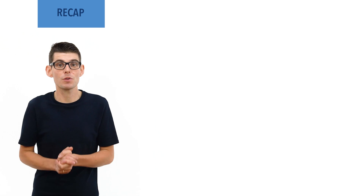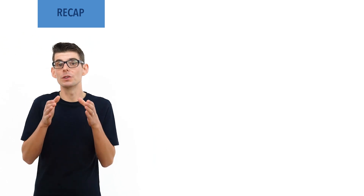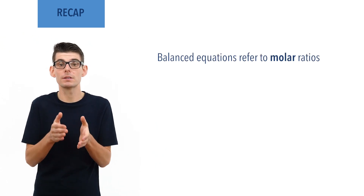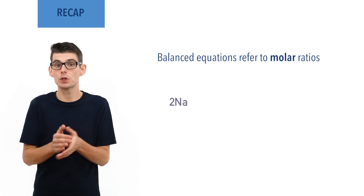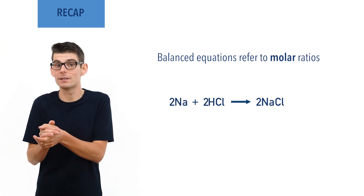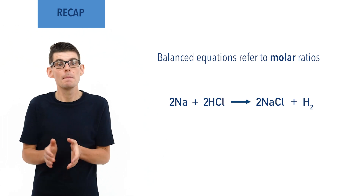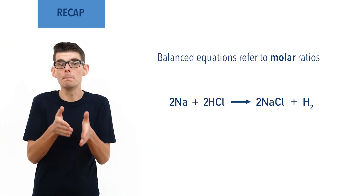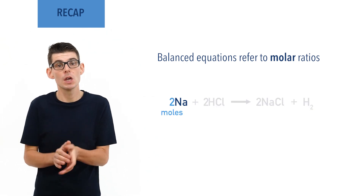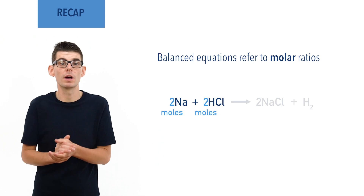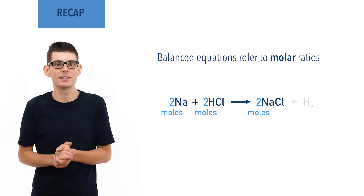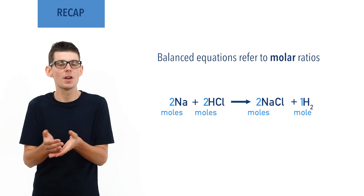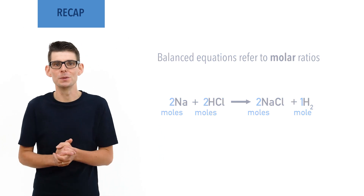Balanced equations in chemistry are based on the molar ratios of reactants and products. For example, 2Na + 2HCl → 2NaCl + H₂ means 2 moles of sodium atoms reacts with 2 moles of HCl molecules to form 2 moles of NaCl and 1 mole of H₂. Recap done? Let's go!